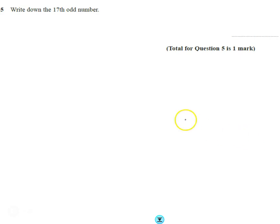So question number five, write down the 17th odd number. Well there's loads of ways you can do it, you can do it in your head. There's a kind of a little trick you can use as well when we talk about it in a second. I think the easiest way is literally just count them out.